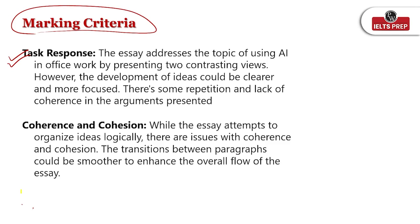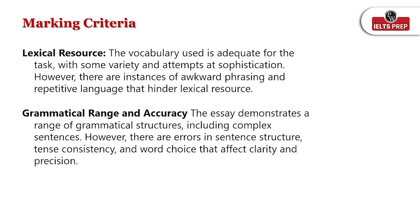To give an overview of the entire essay against the marking criteria: the essay did address the topic about AI, but the development of ideas could be clearer and more focused. There are some repetitions and a lack of coherence observed. For cohesion and coherence, the transitions between paragraphs were not smooth. The essay attempts to organise arguments, but there was a big issue with coherence and cohesion. Always take care of all these criteria when writing.